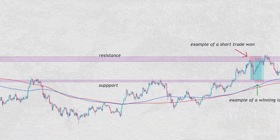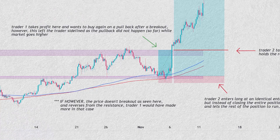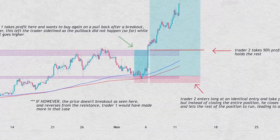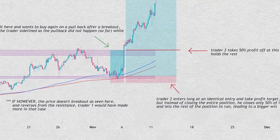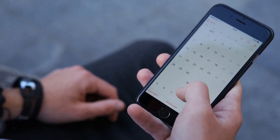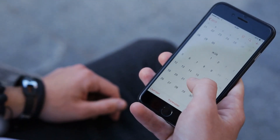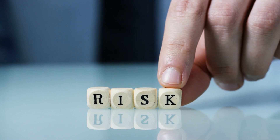Besides that, it's possible that two traders can profit from opposing interpretations of the same market. And on the flip side, traders with similar ideas could have vastly different trade outcomes — this could be due to differing executions, different time horizons and price expectations, or levels of risk tolerance.